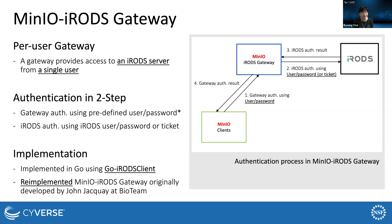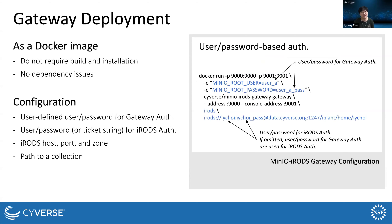MinIO iRODS Gateway is implemented in Go using the Go iRODS client, and the gateway is a re-implementation of the existing gateway originally developed by John Jacquapi at the Bio team. MinIO iRODS Gateway is deployed as a Docker image, so users do not need to rebuild and install it, which often causes dependency issues.